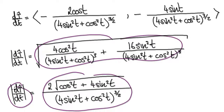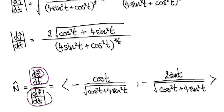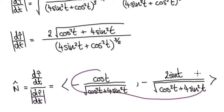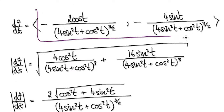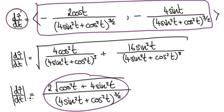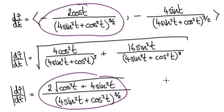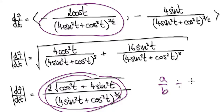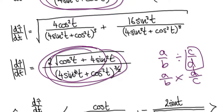Now we've got our magnitude. The unit normal is given by differentiating the unit tangent and then dividing it by its magnitude. Looking at the x-component: you've got two fractions — this thing divided by this thing. Dividing a fraction a over b by c over d is the same as a over b times the reciprocal d over c. So this thing divided by this thing gives you this.